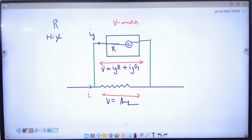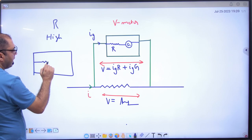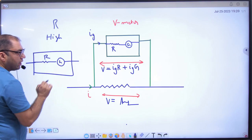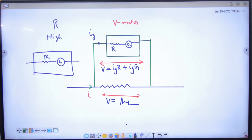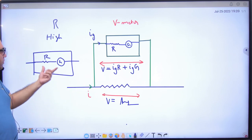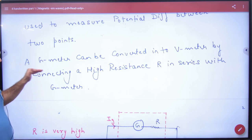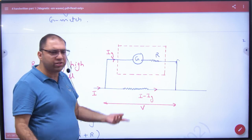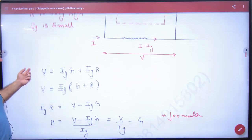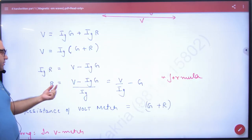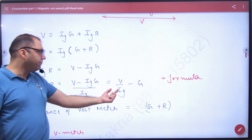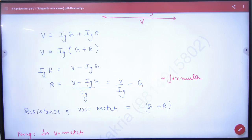So in your books, the voltmeter is shown as a symbol with a V. The actual diagram shows a galvanometer with a high resistance R in series. Galvanometer can be converted into a voltmeter by connecting a higher resistance R in series. From the circuit: Ig into G plus Ig into R equals V. Solving and cross-multiplying, the formula is: R = V/Ig − G.